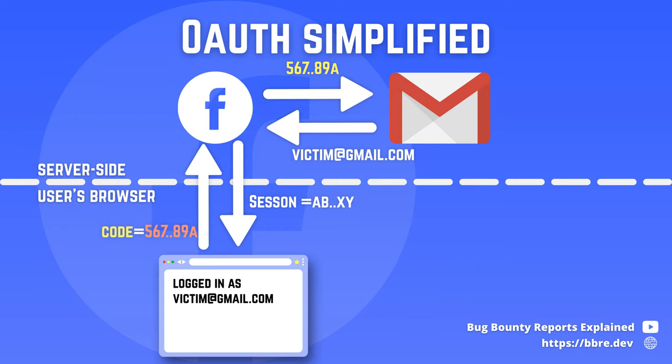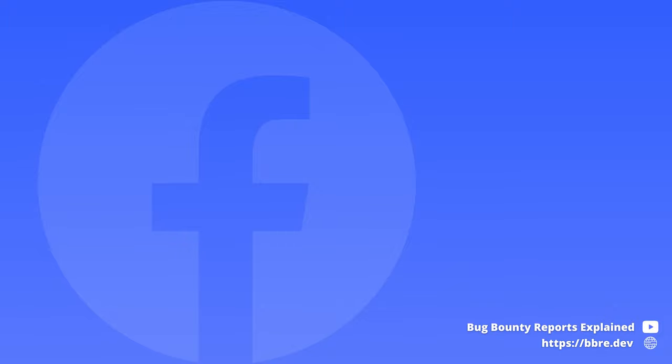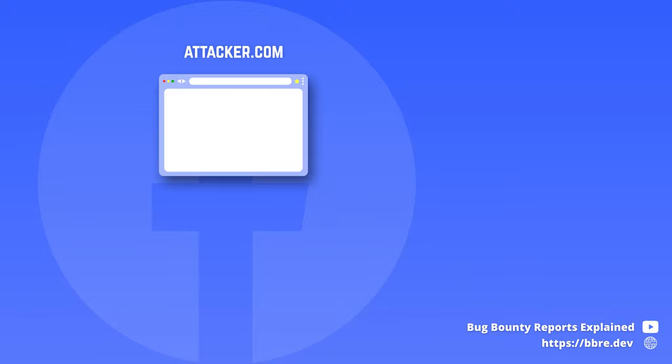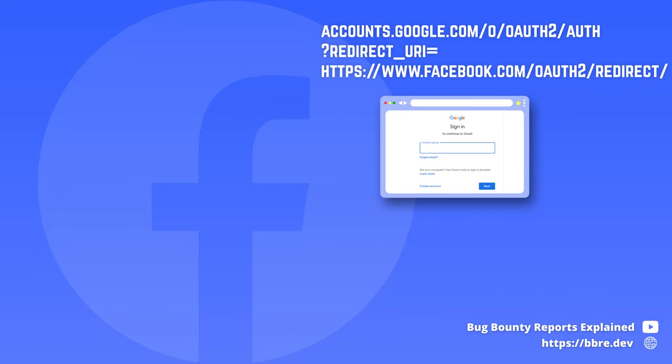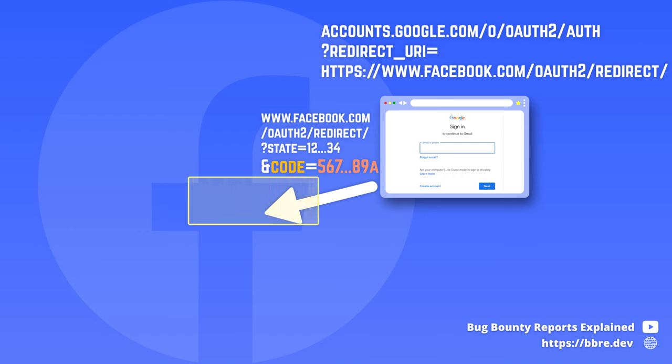So this code is very valuable because it allows you to exchange it for the session cookie. If the attacker would see it, they could also take over your account. Across the years we saw many attacks that looked more or less like this: the attacker tricks the victim into visiting their website, the attacker's website sends the victim into the authentication flow, but before the original website consumes the code, the attacker takes it over and hijacks the user's account. This is exactly what we'll try to do today. However, in modern web and on a hardened target like Facebook, it is not easy — definitely much harder than in the early days of OAuth. In particular, there are two problems that we need to solve.